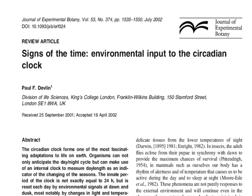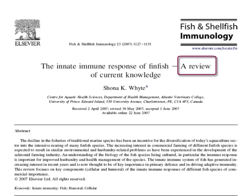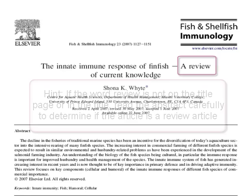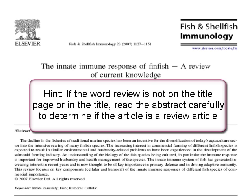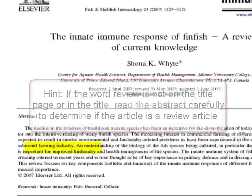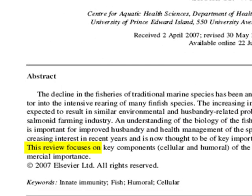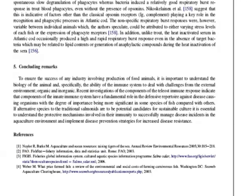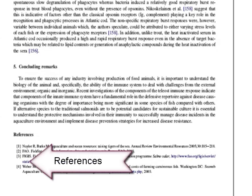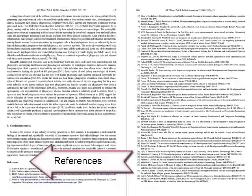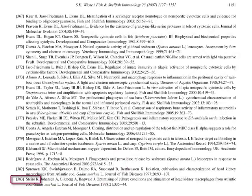How can you determine if an article is a review article? Some articles will be identified by the word 'review' on the title page. If the word 'review' is not on the title page or in the title, read the abstract carefully to determine if it is a review article — for example, 'this review focuses on...' Review articles also tend to have long reference lists that you can use to find other relevant articles and studies. This article has nearly 400 references.